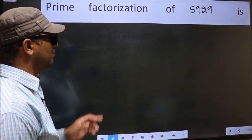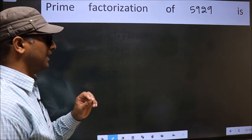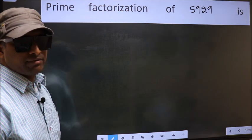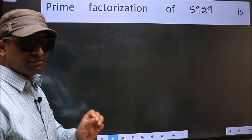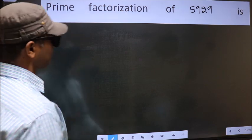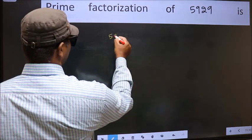Prime Factorization of 5929. To do Prime Factorization, first we should frame it in this way: 5929.